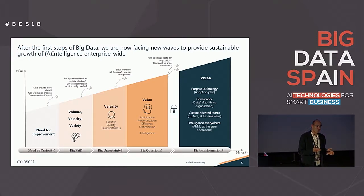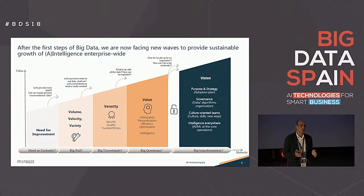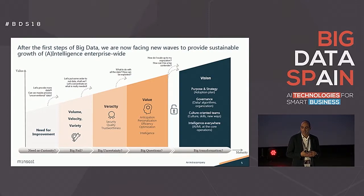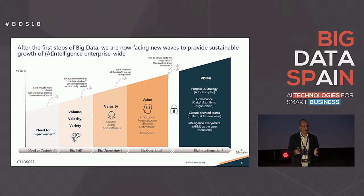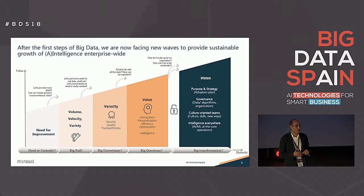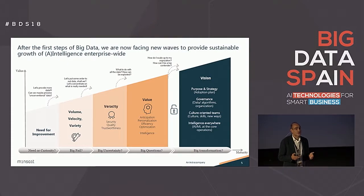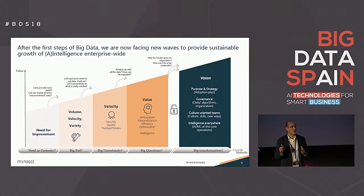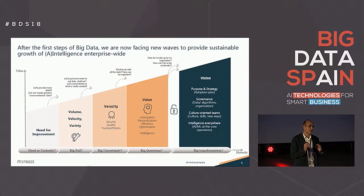Governance — you need governance not only for data. You probably have in place right now more than a thousand algorithms that you have to control because they are working in real time. You need a flexible organization that will adapt very well to changes. And the only way to do that — the biggest challenge right now — is to have a strong culture. Only with a strong culture will you put all these people working together and reach new levels of capability, knowledge, and innovation.